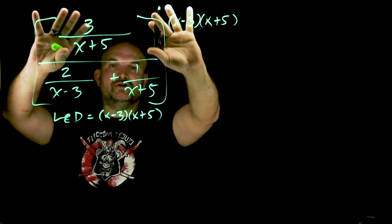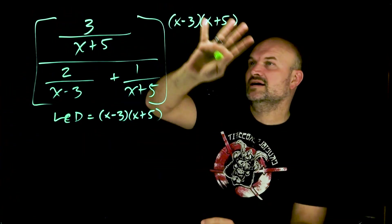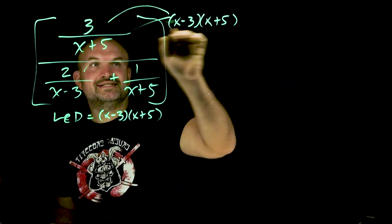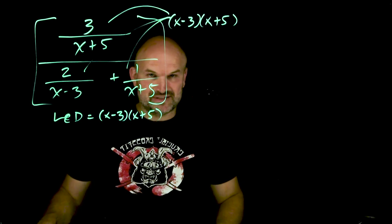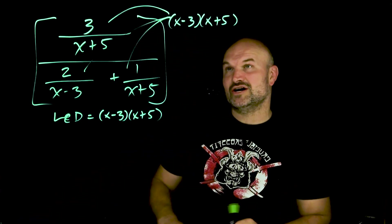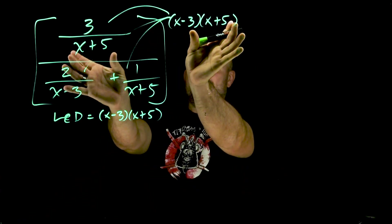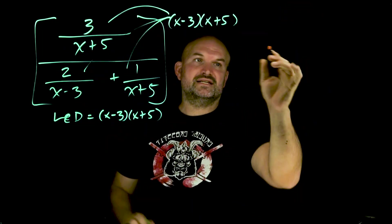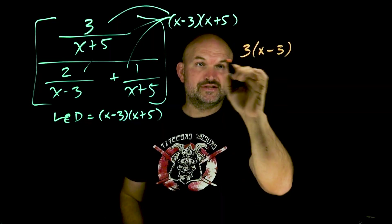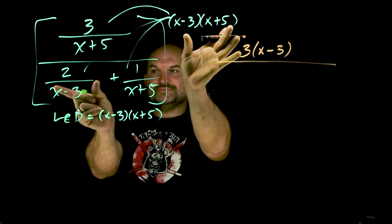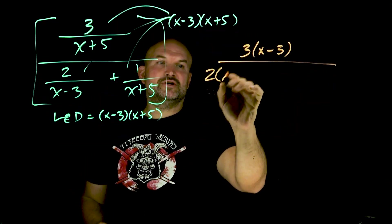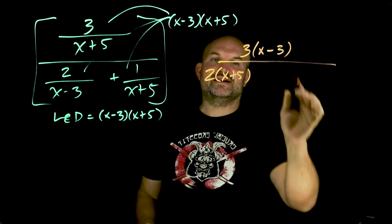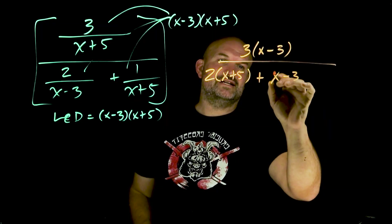So I am going to multiply everything times x minus 3 times x plus 5 — everything in the numerator as well as the denominator. So if I took this expression and multiplied it by that expression, the x plus 5s will divide into themselves. That's going to leave me with 3 times x minus 3 in my denominator. Over here, x minus 3s will divide out, leaving me with 2 times x plus 5. And then over here, my x plus 5s will divide out, leaving me with a positive x minus 3.